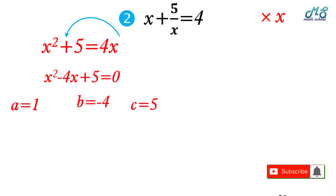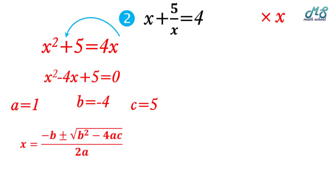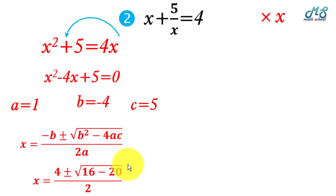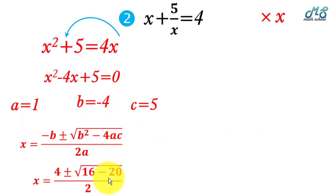Now identify a equals 1, b equals negative 4, c equals 5. Applying the general formula: x equals 4 plus or minus the square root of b squared minus 4ac, which is 16 minus 4 times 1 times 5, equals 16 minus 20, equals negative 4.